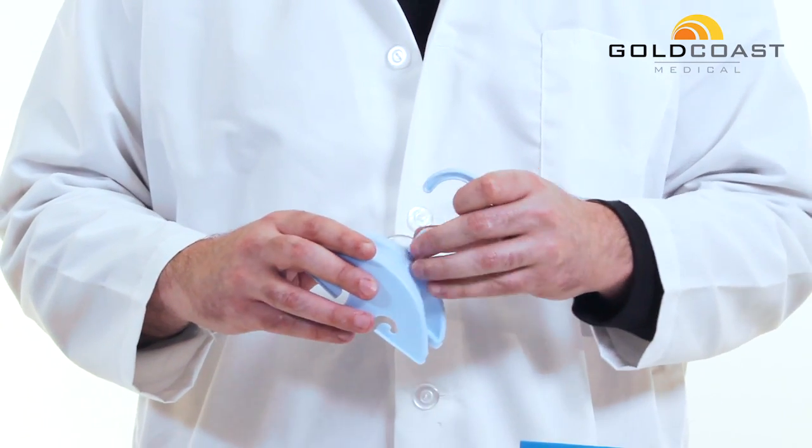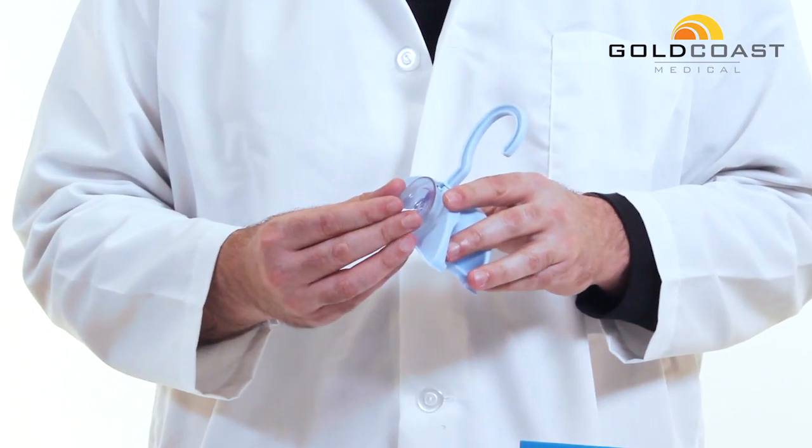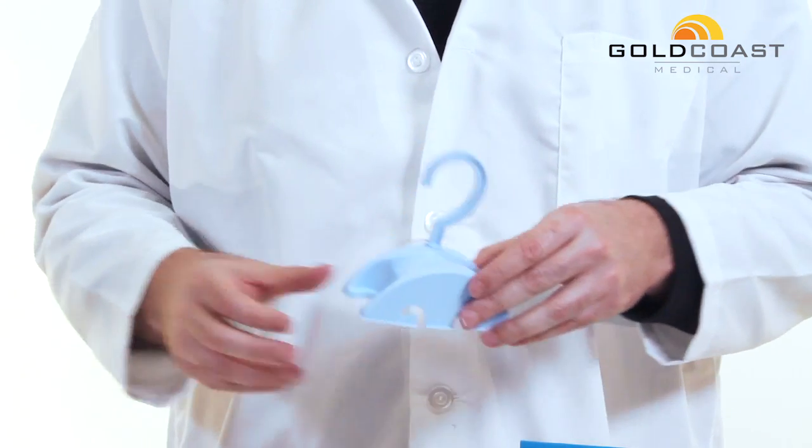You can take the hook, simply slide it into the slot here. There's also a suction cup on the back, depending on how you want to hang the hanger.